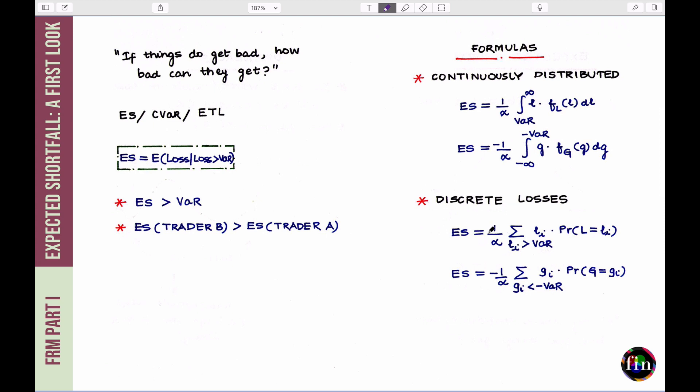So, to answer this newly phrased question, we introduce this new risk measure, which we call the expected shortfall. It's also called the conditional VAR, and it's also called the expected tail losses. Irrespective of what you call it, the expected shortfall, think of it to be a risk measure, which is trying to peek into or look into the tail and try and find out how the losses will behave if they do exceed the VAR.